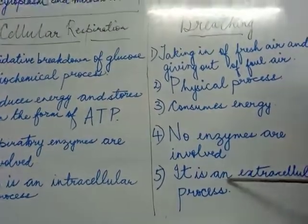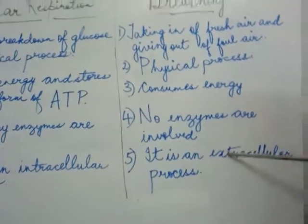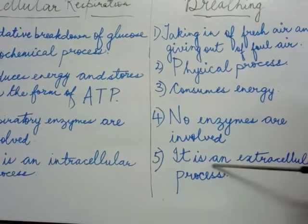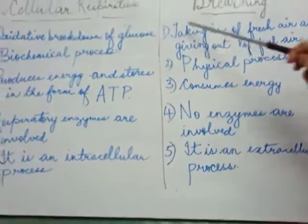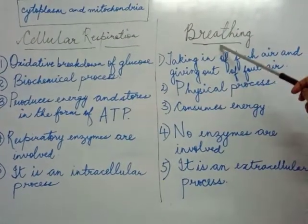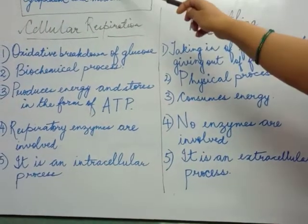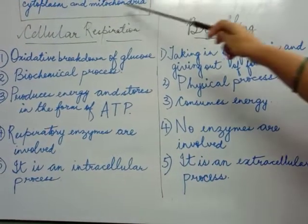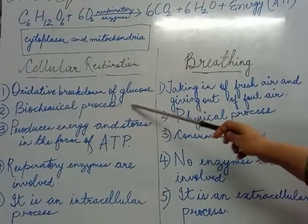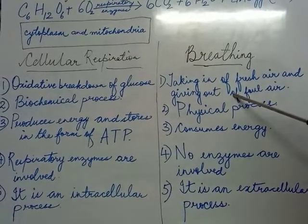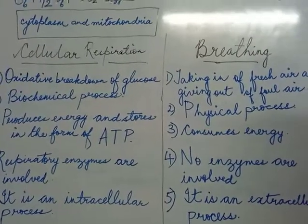Breathing is an extracellular process — cells are not involved, only organs are involved, that is why it is called an extracellular process. So, these are some important differences between cellular respiration and breathing. I think you all have understood the chemical equation of respiration, the site of respiration, and the differences between cellular respiration and breathing. That is all for today children. I will give you a few assignment questions that you have to do in your notebook. Goodbye.